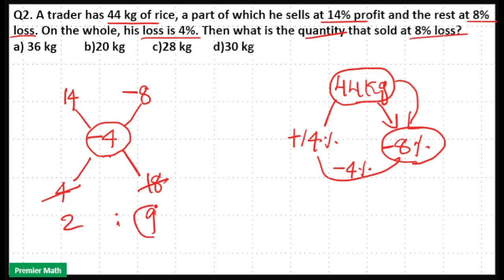So we need to find out 9 parts. This is the loss. Total part is equal to 11. And out of which 9 parts are loss factor. So if you want to find out the original number, multiply it with original number that is 44 kilogram.